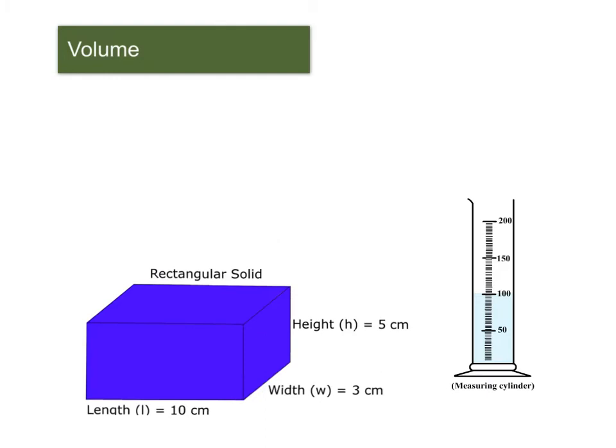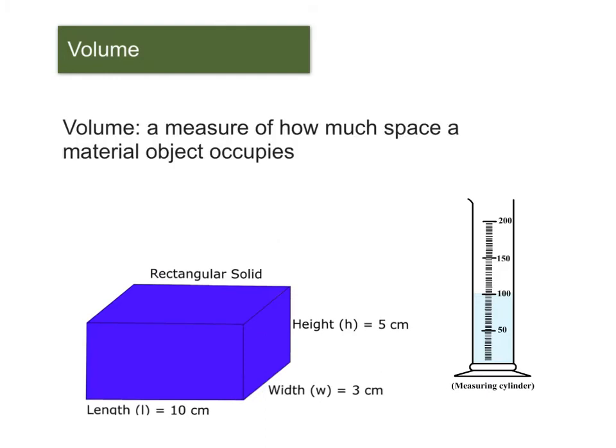Volume is a measure of how much space a given material occupies. So if you have a solid, that would be length times width times height like you've measured in math class before. If you have a liquid, then we measure that using a graduated cylinder or possibly a flask or a beaker or something along those lines. And that volume would be measured in milliliters or liters, whereas the volume of the solid would probably be given in centimeters cubed.